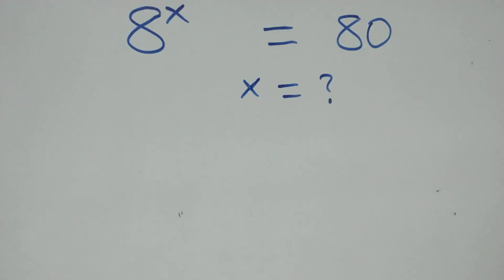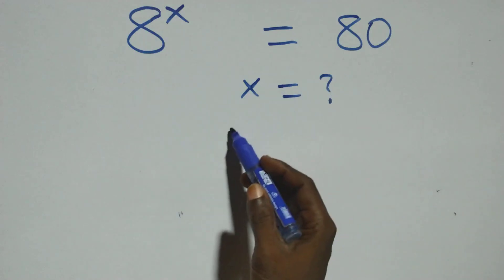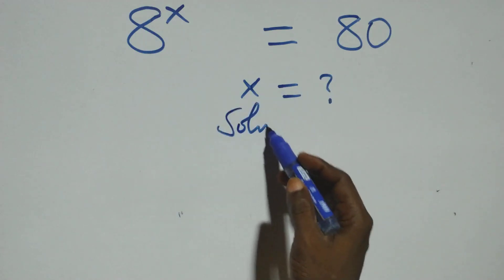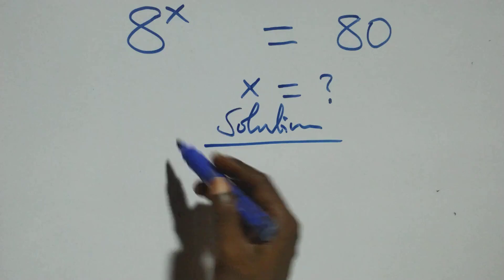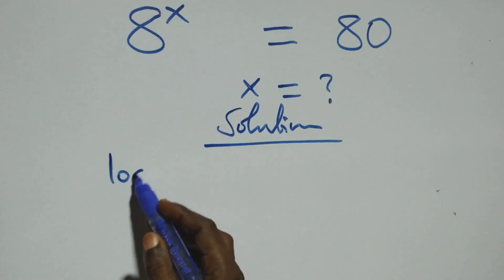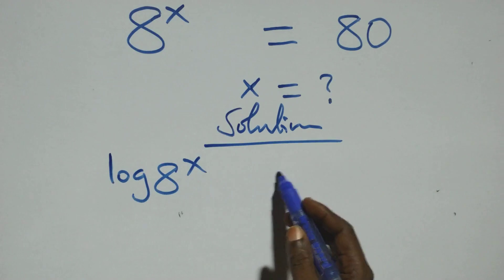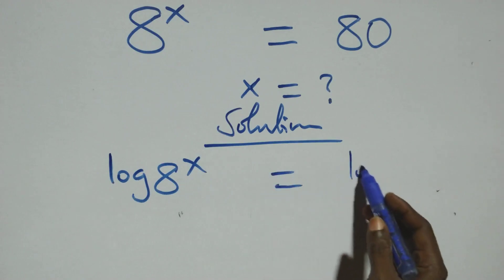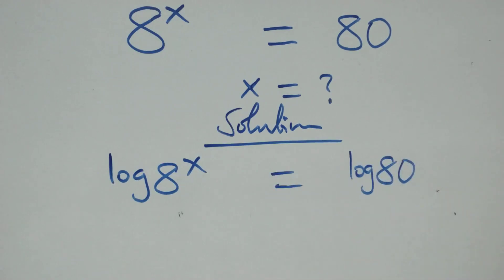Hello, you are welcome. How to solve this nice exponential equation. And what we have here, we take the log on both sides. This gives us log of A raised to power X equals to log 80.